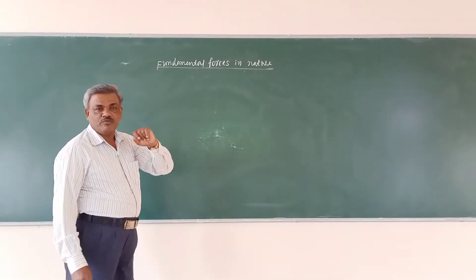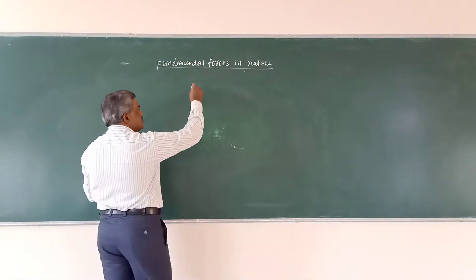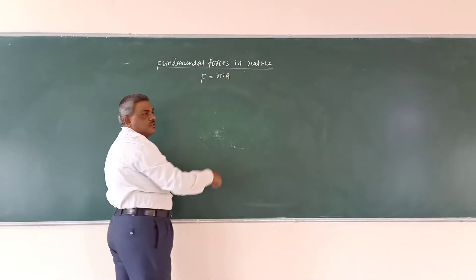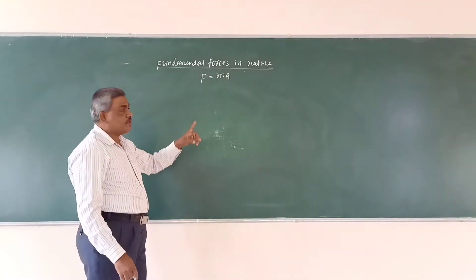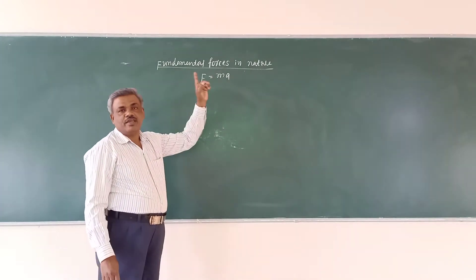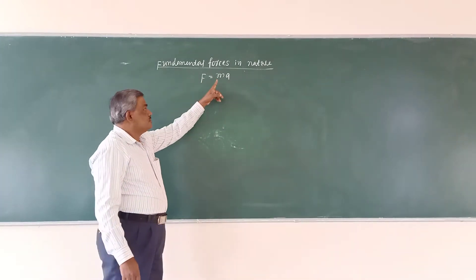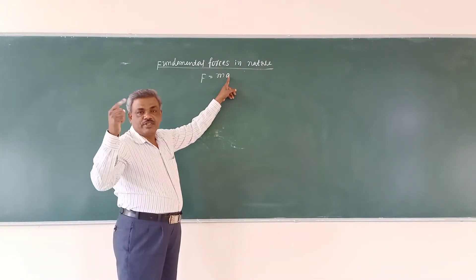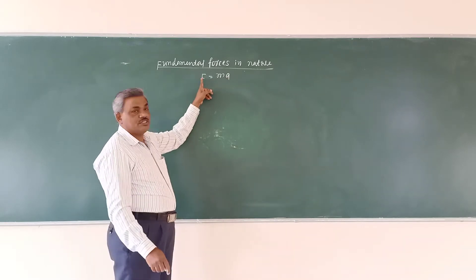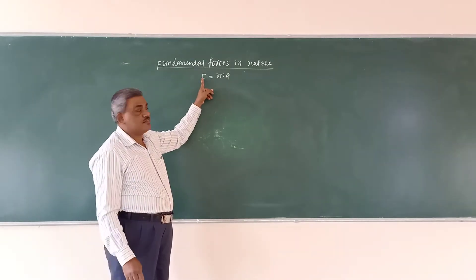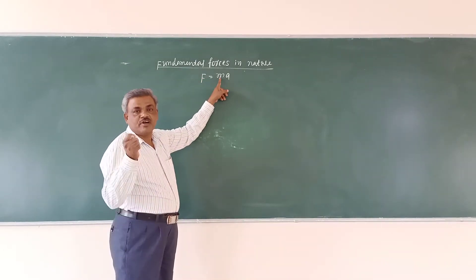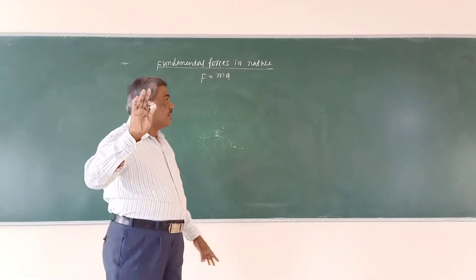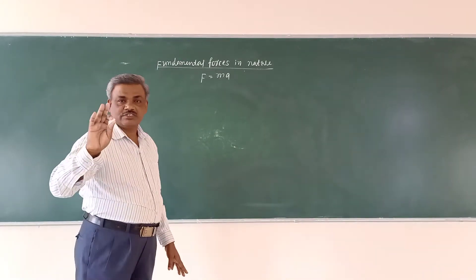How can we measure the force? Force is measured by the product of mass and acceleration. So the formula F equal to m times A. A is the acceleration of the body. When the acceleration increases, force is also increased. The mass of the body remains constant.